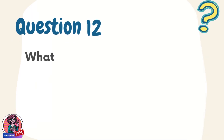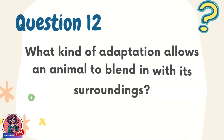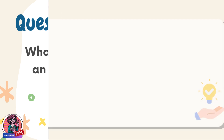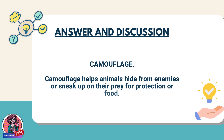Question 12. What kind of adaptation allows an animal to blend in with its surroundings? Answer: Camouflage. Camouflage helps animals hide from enemies or sneak up on their prey for protection or food.